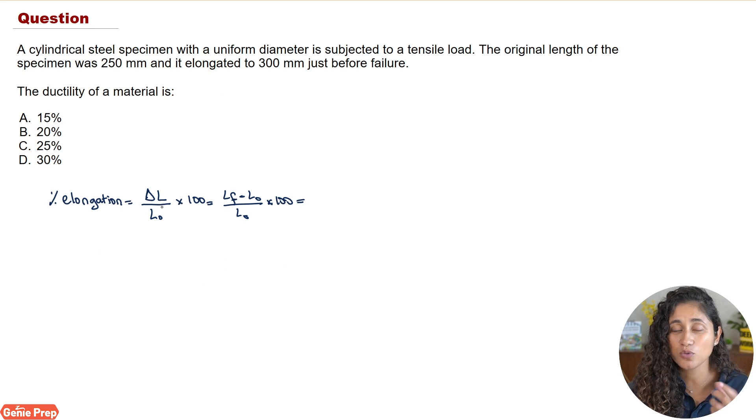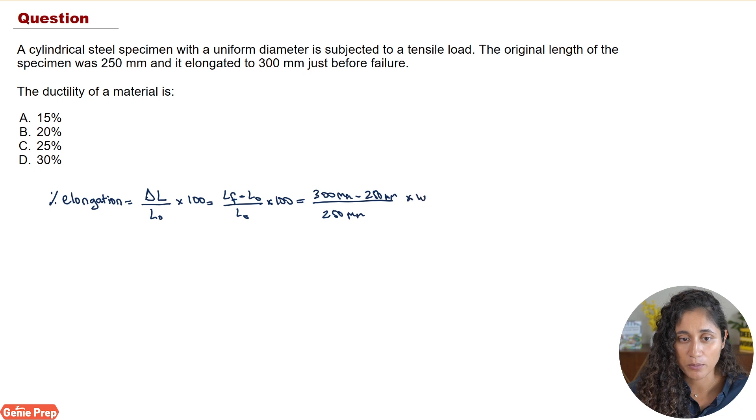Here we have delta L, which is the change in length. We're going to do the final length minus the initial length and we're going to divide it by the initial length and then multiply it by 100 so that we can get percentage. So the final length or the length right before rupture is 300 millimeters and then we're going to do minus 250 millimeters. That's the original length. We're going to divide it by 250 millimeters and then we're going to multiply the whole thing by 100. Notice guys, here the millimeters cancel, which is good. And now, if you plug in these numbers in your calculator, you're going to get about 20%.